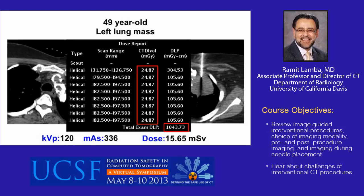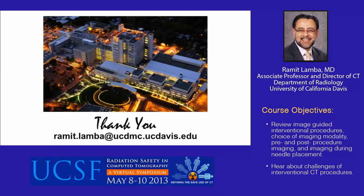Finally, I would like to leave you with the important message that CT-guided procedures need not be performed at high radiation doses — as seen in this case where a large lung mass in contact with the chest wall was targeted using an mAs of 336, with a total DLP for the procedure of 1043 and an effective radiation dose of 15.65 mSv delivered over a limited region of the chest. Thank you all for your time and attention.